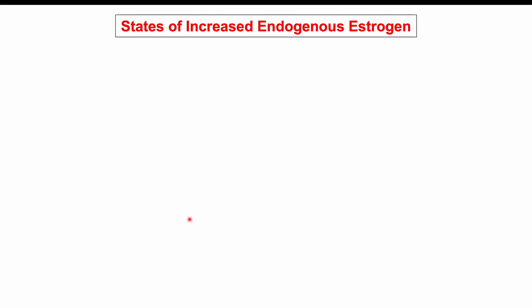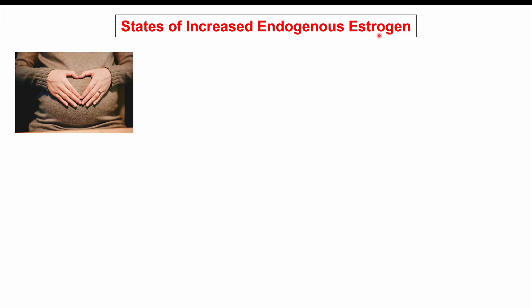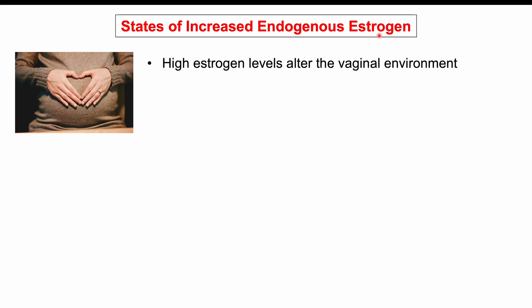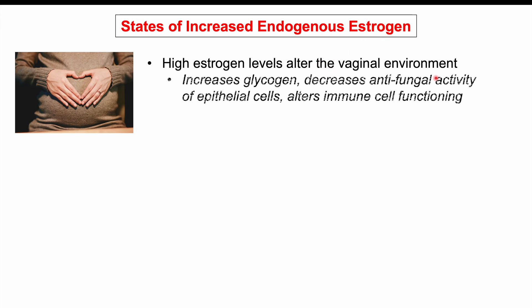The first risk factor is states of increased endogenous estrogen — estrogen that is produced in our own body. High estrogen levels alter the vaginal environment via several mechanisms, including increasing glycogen within the vaginal cavity. Candida species can use glycogen as an energy source to grow and proliferate. High estrogen also decreases antifungal activity of vaginal epithelial cells and alters immune cell functioning. All of this can play a role in increasing the risk of vulvovaginal candidiasis.